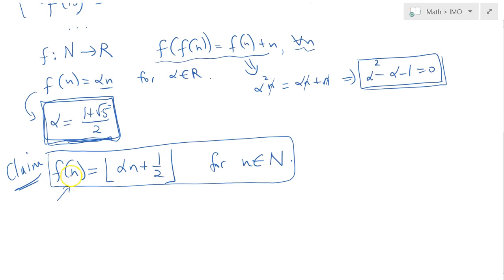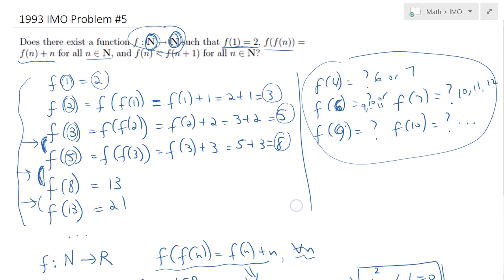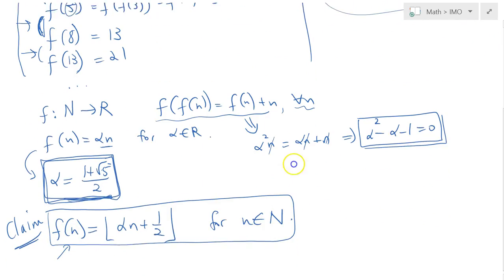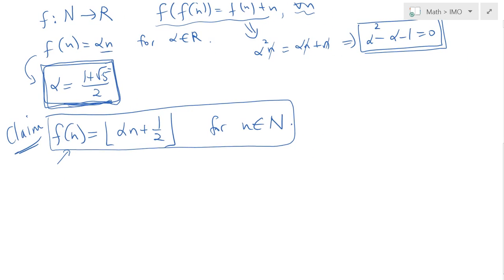For the rest of the problem, I need to show that this claimed function satisfies the properties described in the problem. So f(1) should equal 2, that's easy to confirm. I just leave it to you as an exercise to plug in 1 and calculate that the floor of this expression when n equals 1 comes out as 2. Now the important ones are the second and third conditions, so we need to first show that f(f(n)) equals f(n) plus n, and then secondly that it's also increasing.